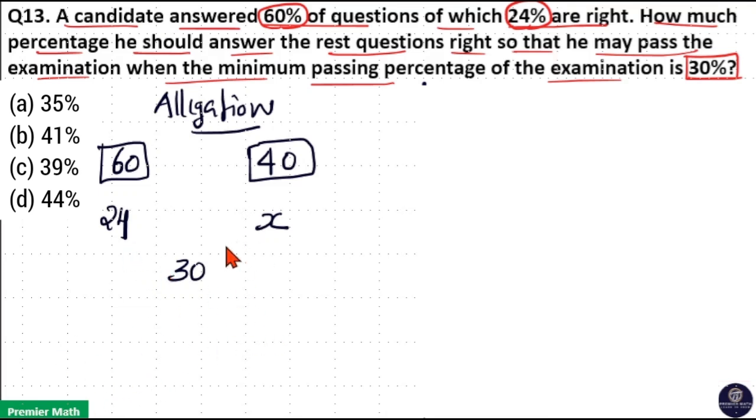Now using the allegation method, the difference between 24 and 30 is 6, and the difference between x and 30 is x minus 30.